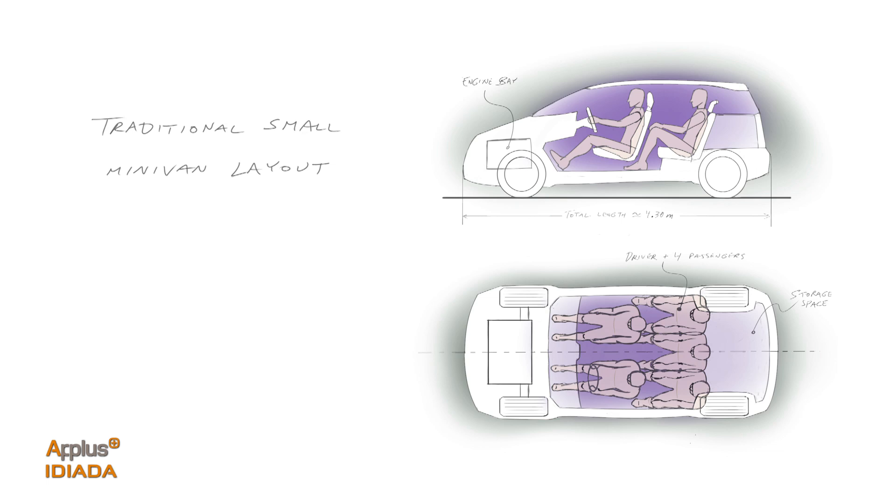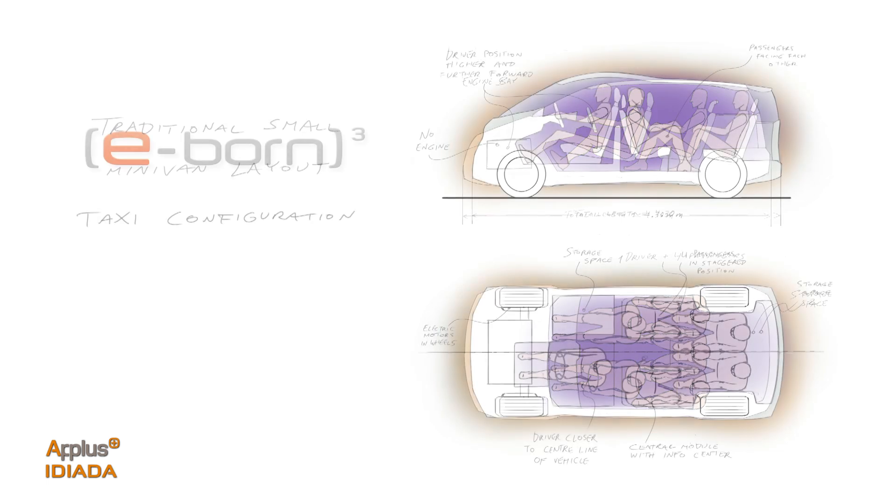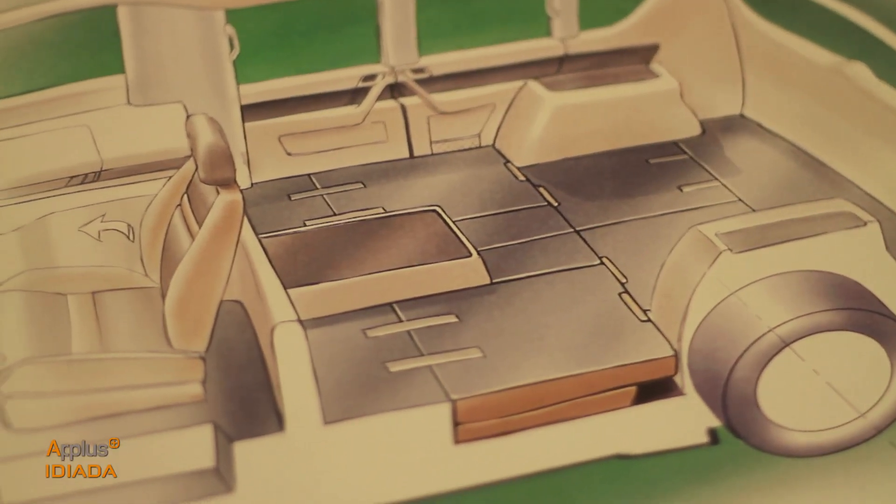The vehicle configuration is designed to meet two primary targets. The first being the urban family transporter or taxi configuration.